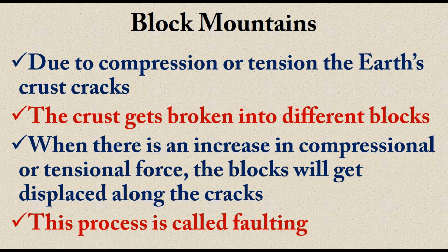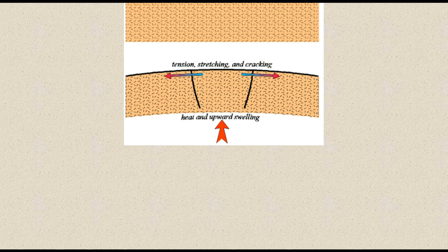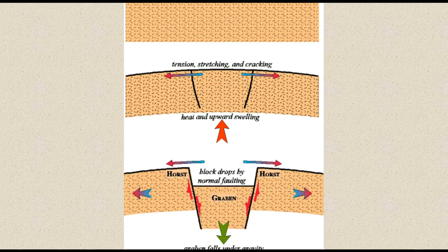The formation of cracks and the movement of blocks of the earth's crust along those cracks is called faulting. Imagine a layer of rock being pulled from either side — that is tension. When tensile force is applied, stretching as well as cracking takes place. These cracks are called fault lines. As tension increases further, the leftmost and rightmost pieces move away from each other and the middle block drops downwards.